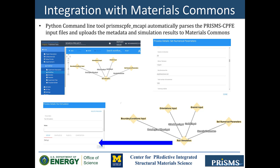Another integration is Prism's Plasticity with Materials Commons. Materials Commons is a virtual collaboration space and repository for archiving, sharing, and publishing information and data from experiments and computations. An important part of the Prism's framework is this integration, allowing you to easily upload input files and simulation results to Materials Commons, share data with colleagues, and publish data with a DOI for use in dissertations or manuscripts — and it's totally free.